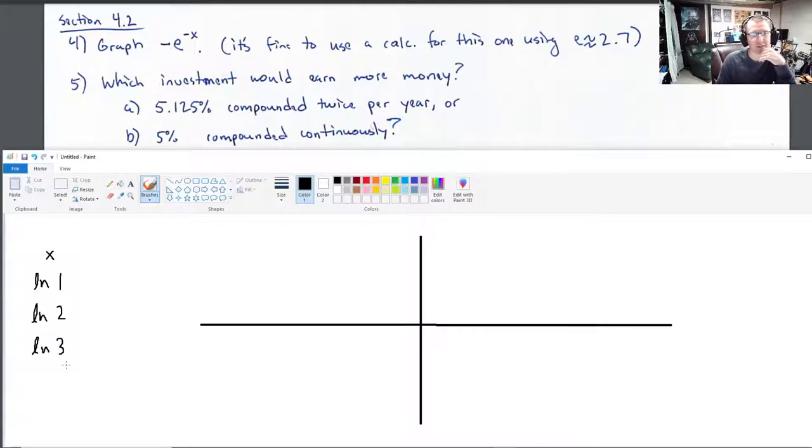Natural log of 1, and then I'm going to plug in natural log of 2, natural log of 3. If you had a calculator, you just plug in like 1, 2, 3, and then negative 1, negative 2, negative 3. For me, this is what I'm plugging in. I'll also plug in 0. I'll also plug in negative natural log of 2 and negative natural log of 3.